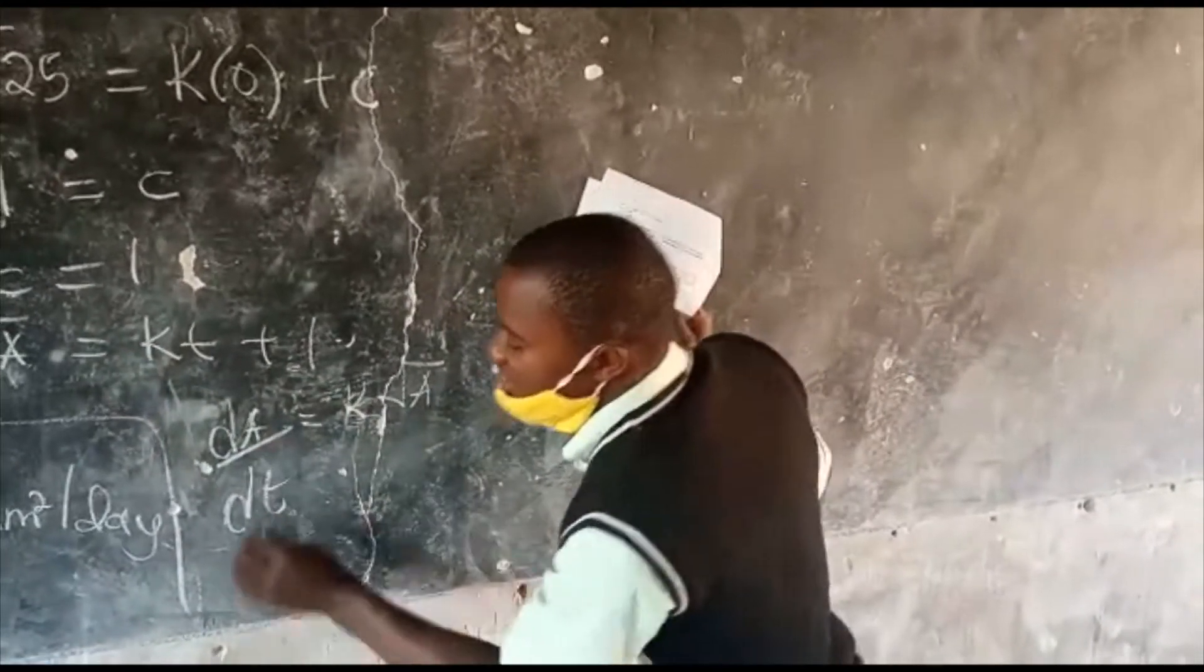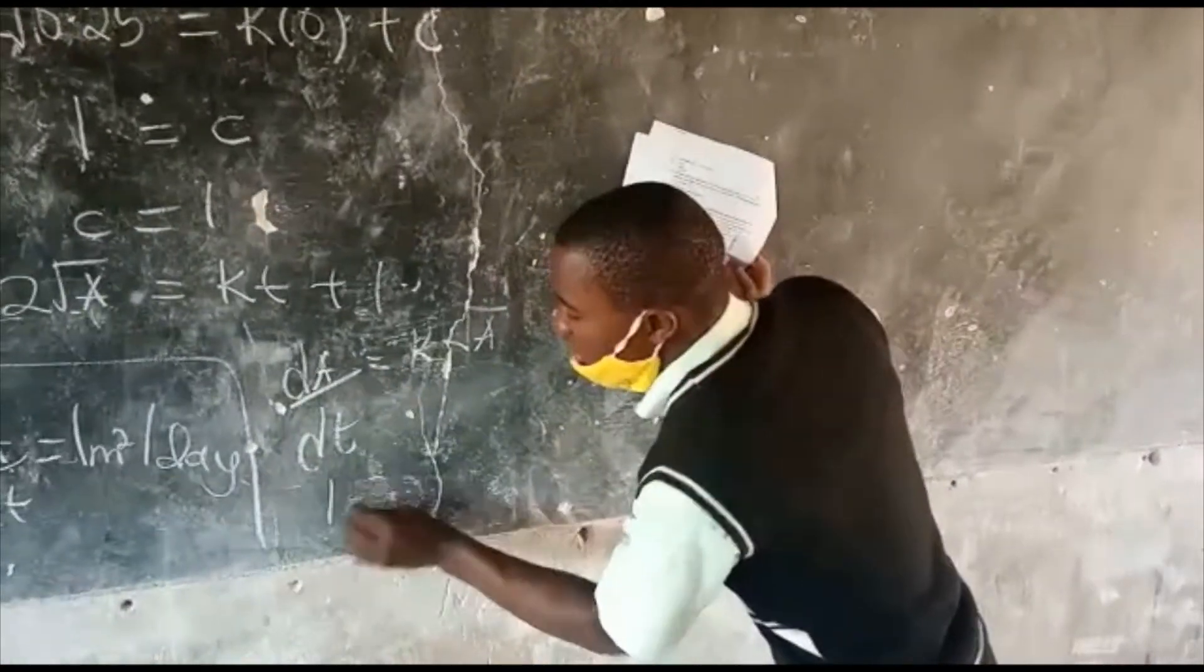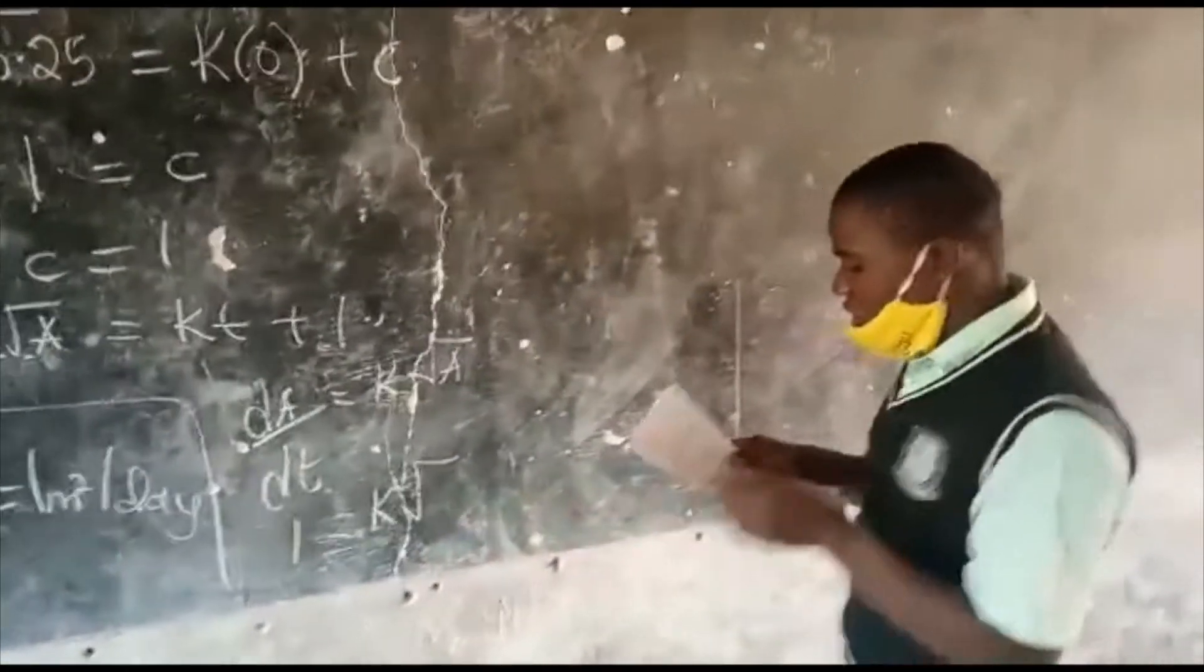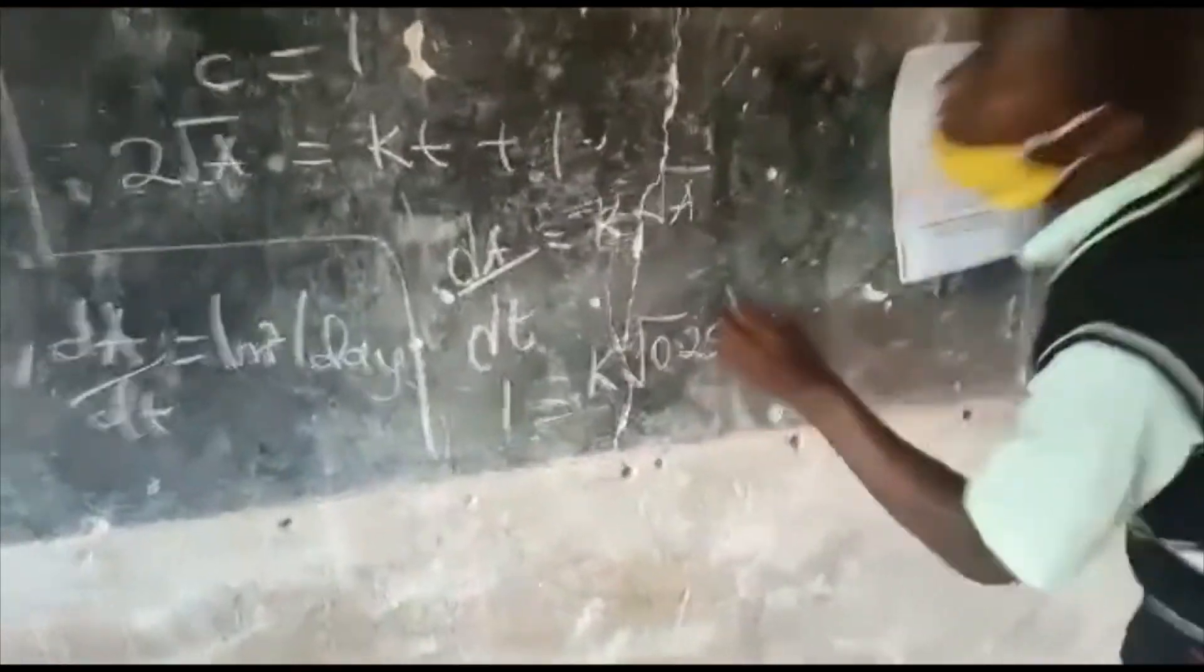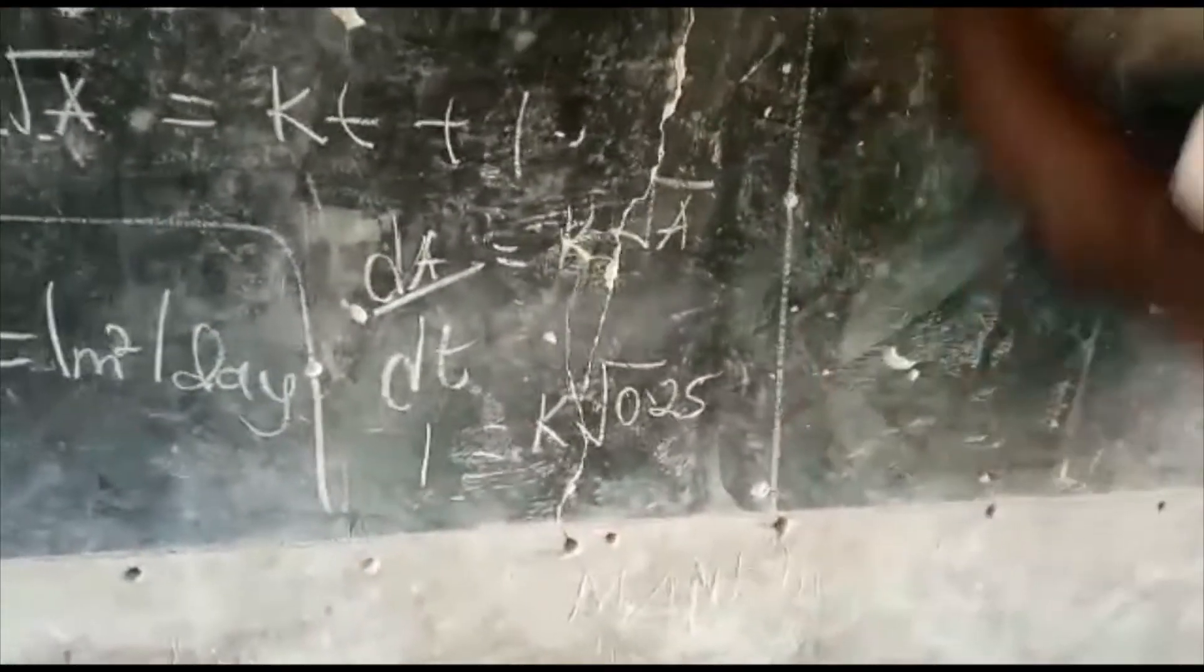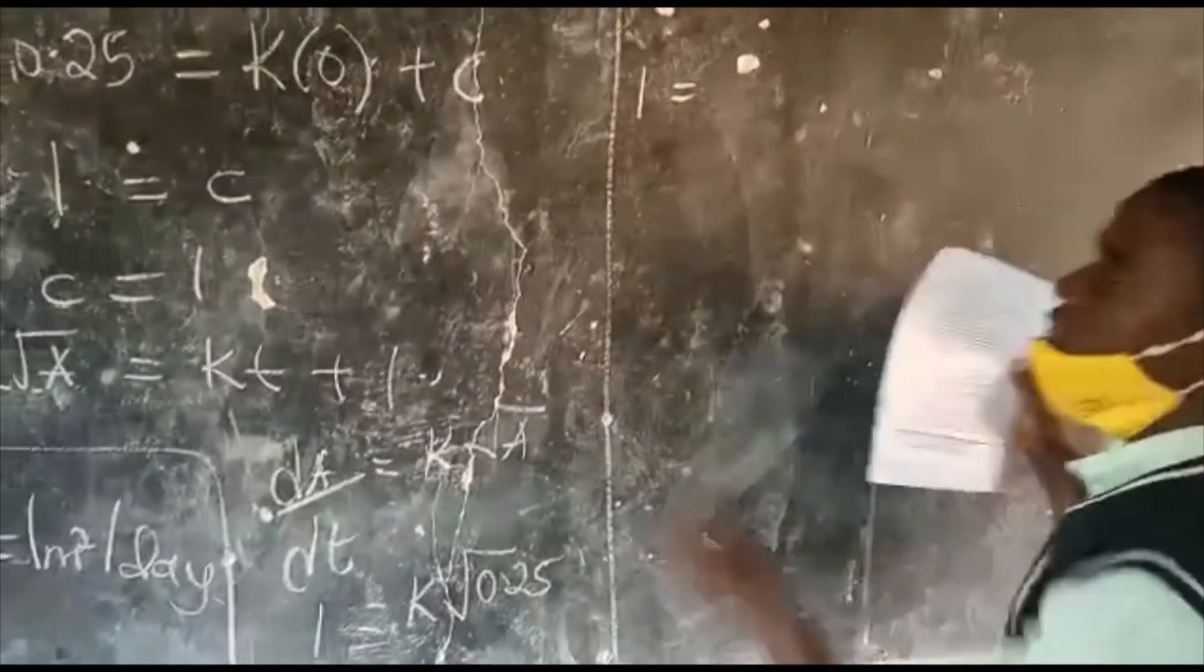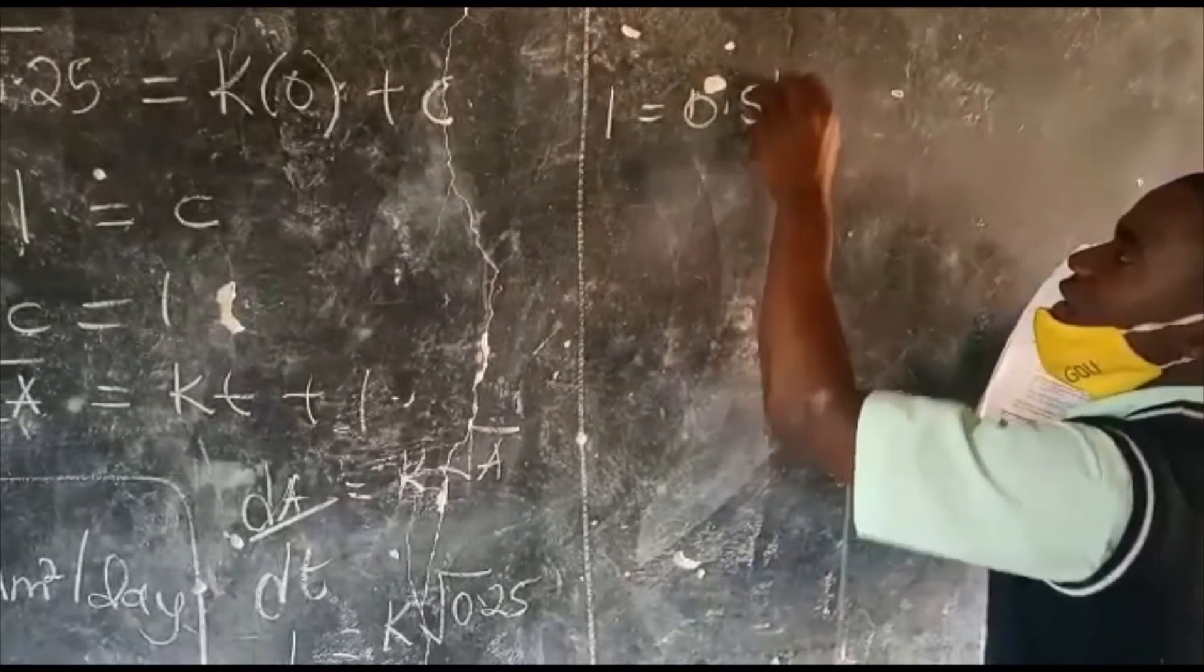I have the dA over dT was given to me as 1, equal to k, and my A, because they have said initially, the weed is 0.25 meters squared. So, 1, because to get the square root of 0.25 is 0.5. So, it is 0.5k.